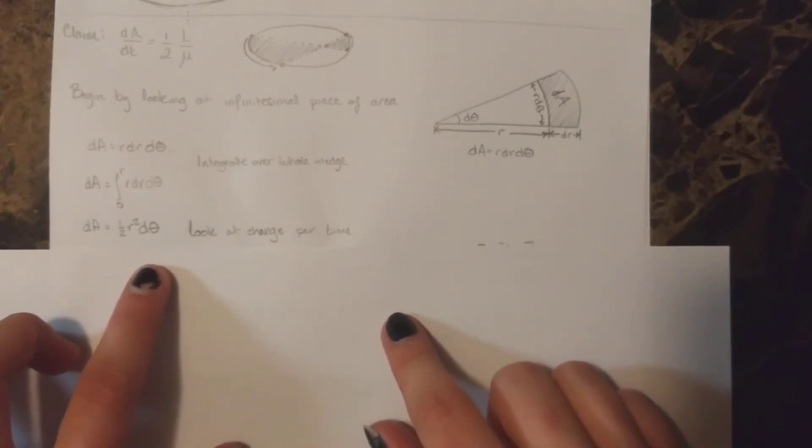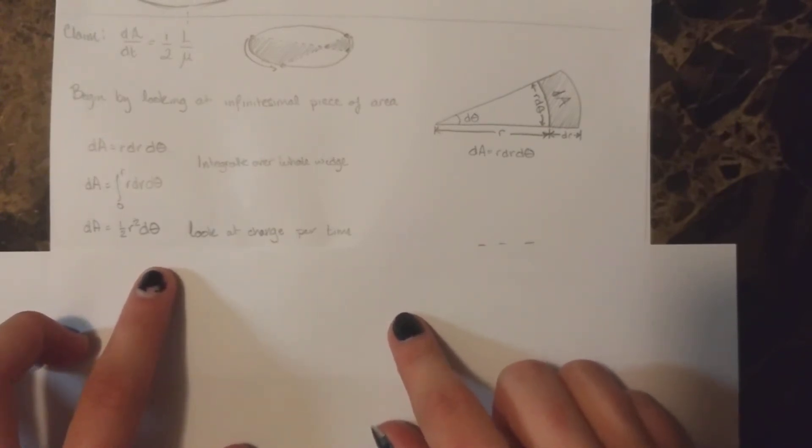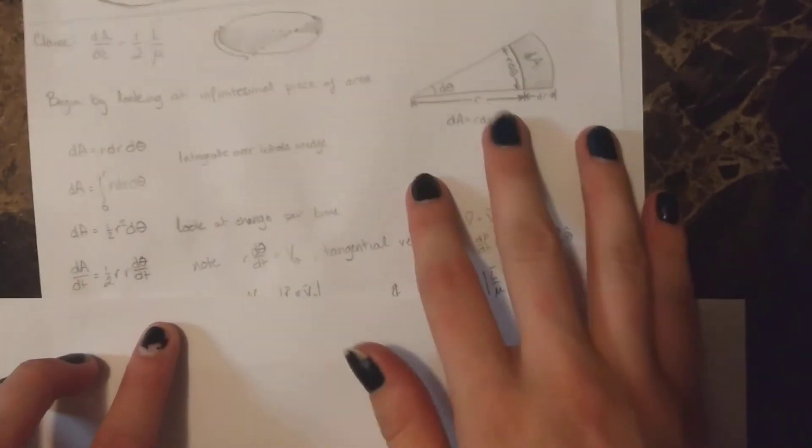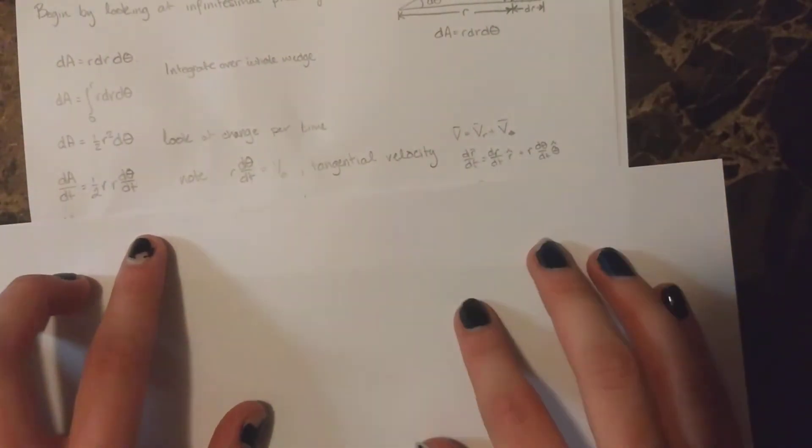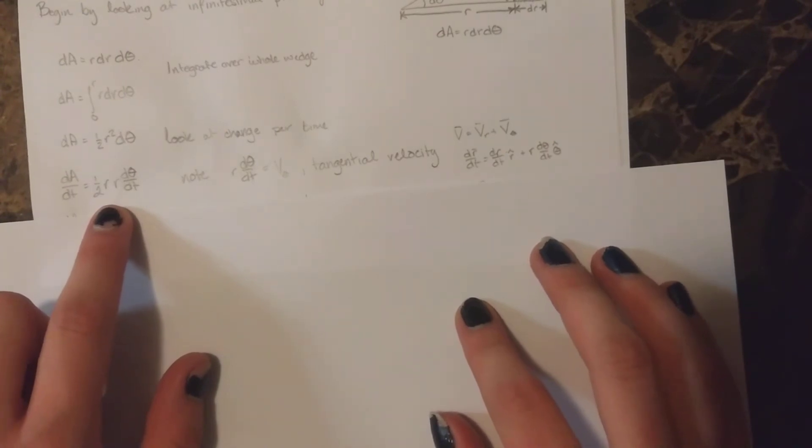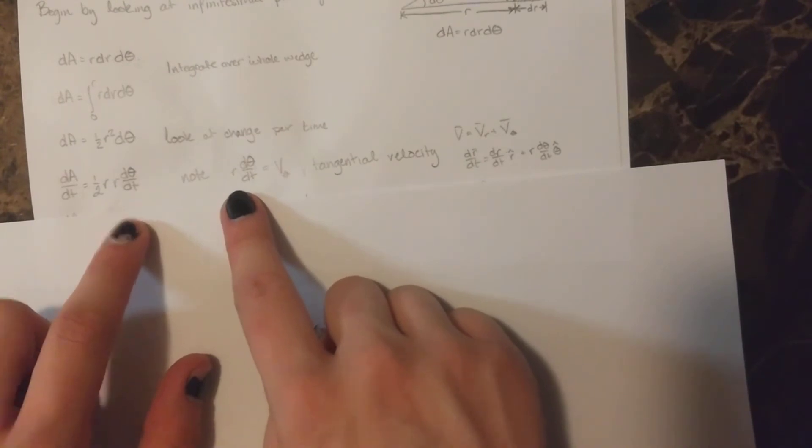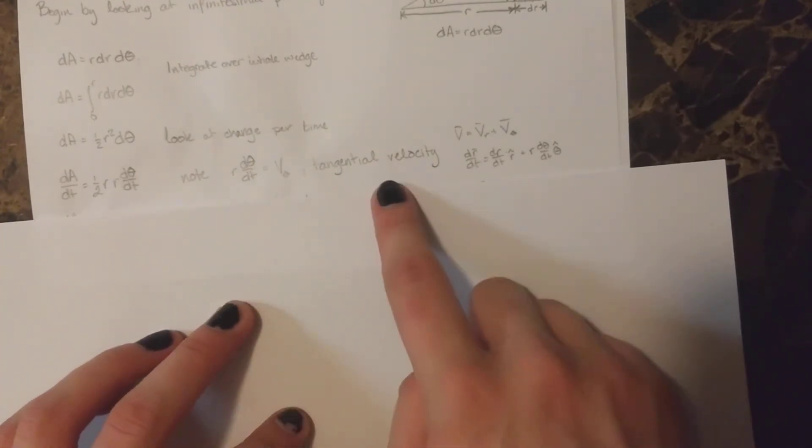Now if we look at this as it changes over time, so the ratio over time, and I've split up the r squared into r times r d theta dt, because we can see that r d theta dt is equal to the tangential velocity v theta.